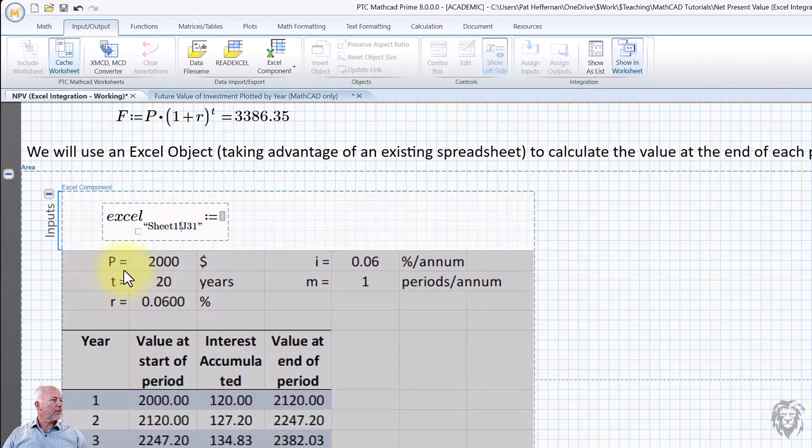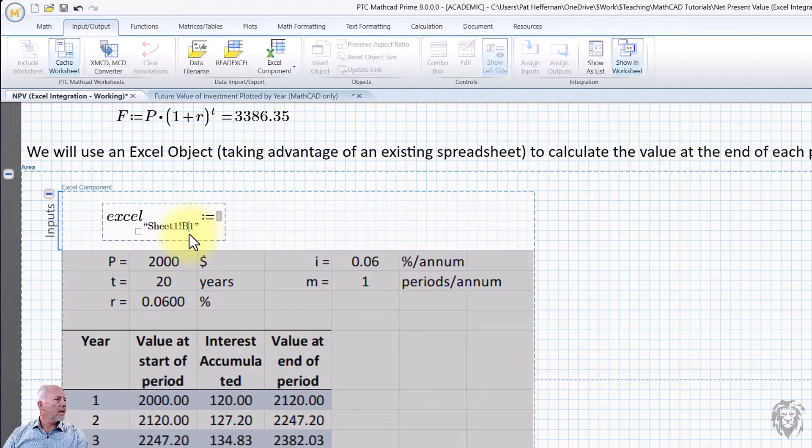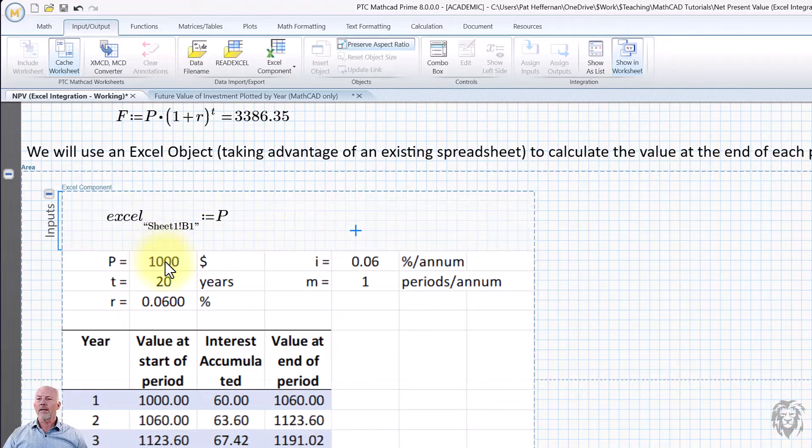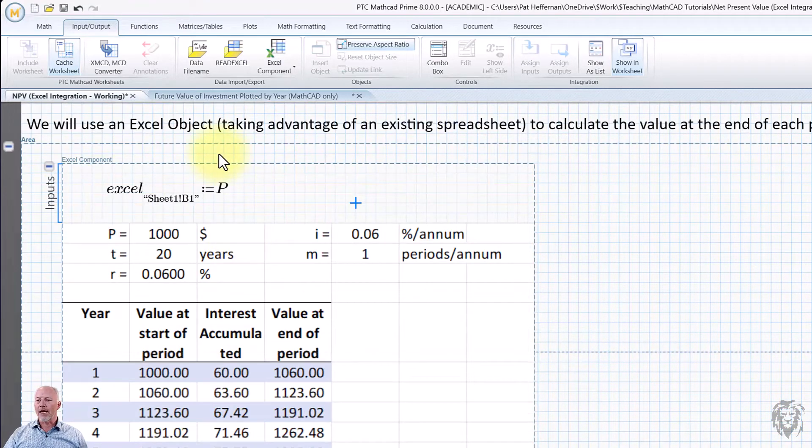So basically what it says is Excel and it gives a range within the Excel sheet. And so you have to control this. So sheet one, instead of J30, we want 31. What we want this to be is B one is where the P value is, right? And so if I just get in here, B one, and we set that equal to a value for principles. So look what happens when I click out of this and it will take on the value of P, which is defined earlier in our MathCAD sheet. And so we have to go through and we have to do that for the rest of the variables that are going to matter to us.